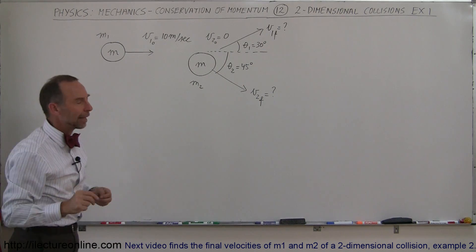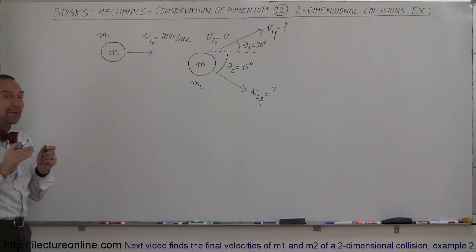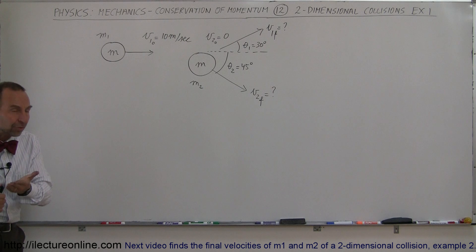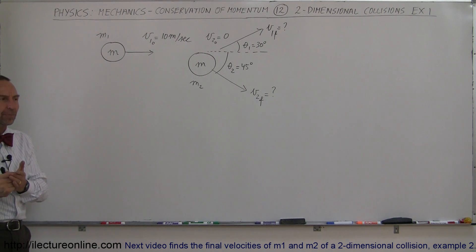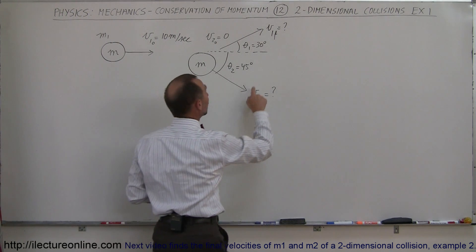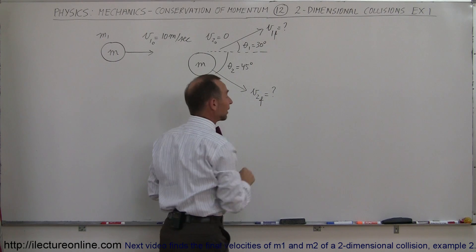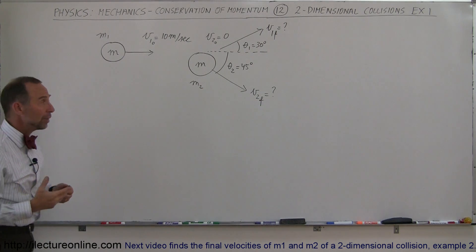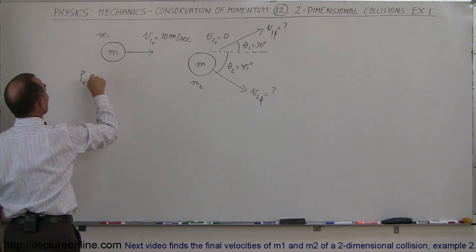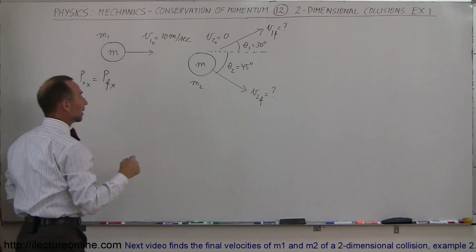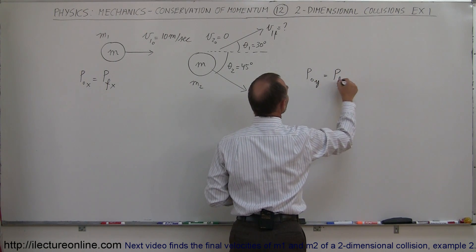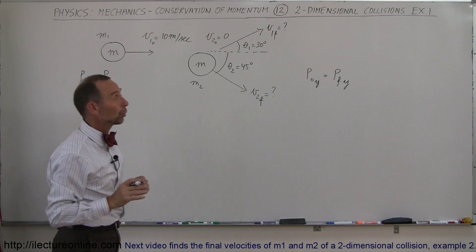With conservation of momentum, momentum is conserved in any dimension and any direction. So we can say that momentum is conserved in the x direction and momentum is also conserved in the y direction. Because of that, we're going to end up with two equations. We need two equations because we'll have two unknowns: v1 final and v2 final. The momentum initial in the x direction equals momentum final in the x direction, and likewise for the y direction.